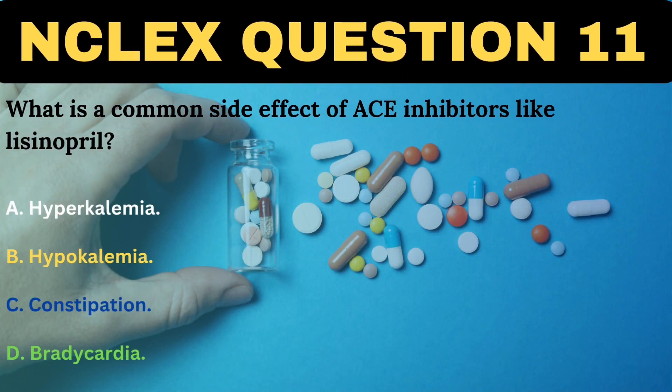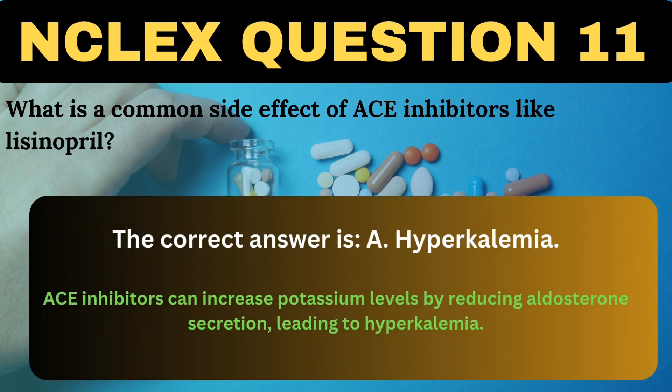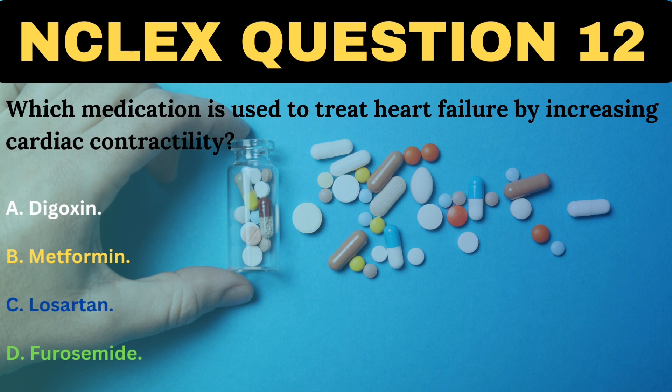What is a common side effect of ACE inhibitors like lisinopril? A. Hyperkalemia. B. Hypokalemia. C. Constipation. D. Bradycardia. The correct answer is A, Hyperkalemia. ACE inhibitors can increase potassium levels by reducing aldosterone secretion, leading to hyperkalemia.